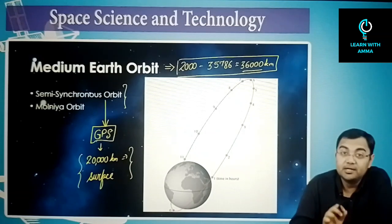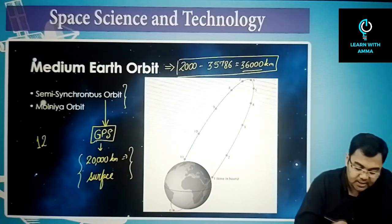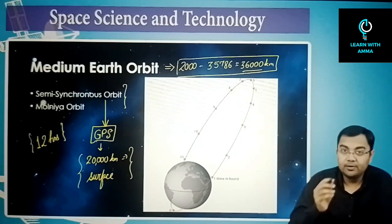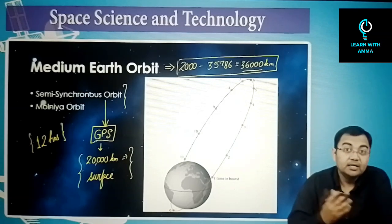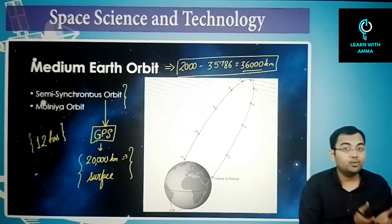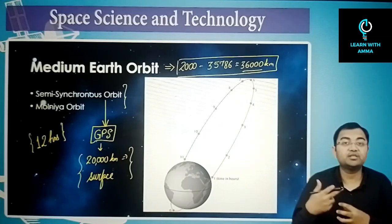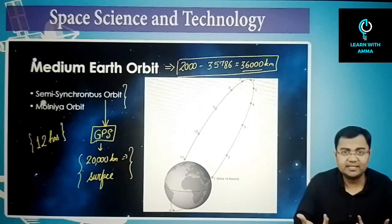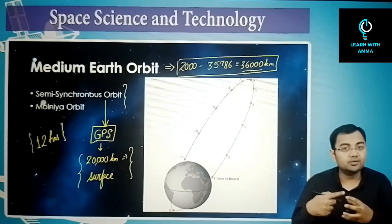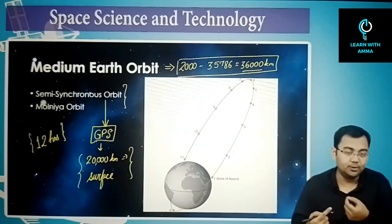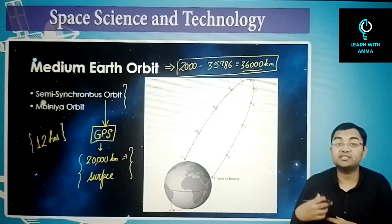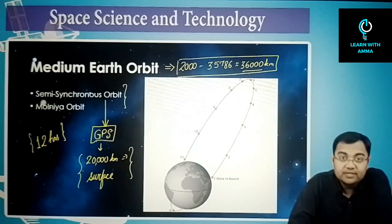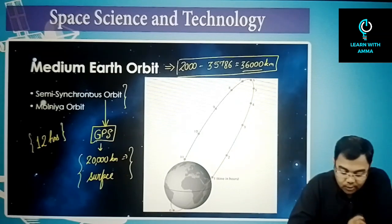In 12 hours, a semi-synchronous satellite returns to the same place where it started. Compare this to a low earth orbit satellite which returns to the same latitude in 1.5 to 2 hours — whereas the semi-synchronous orbit takes 12 hours to complete one revolution.